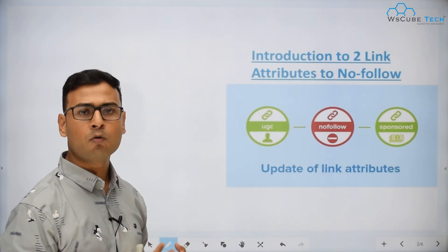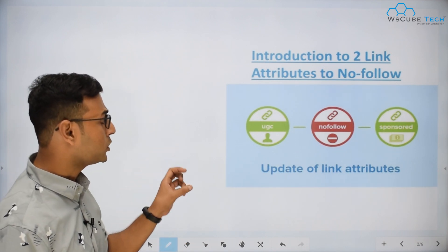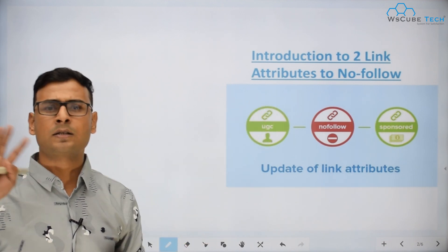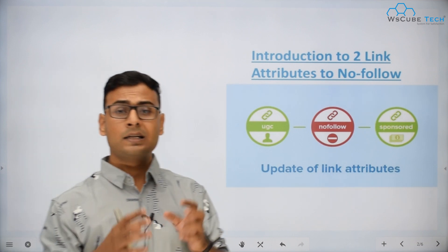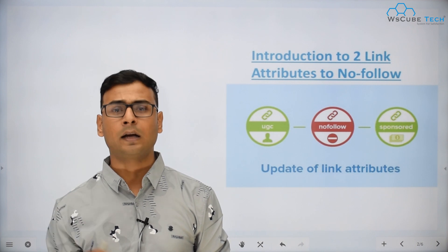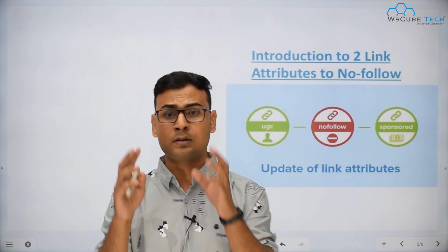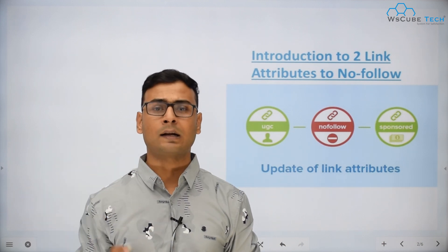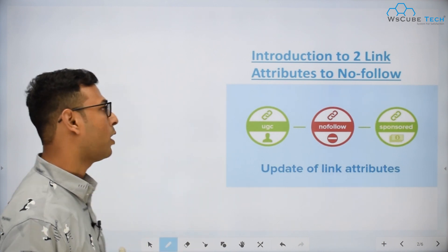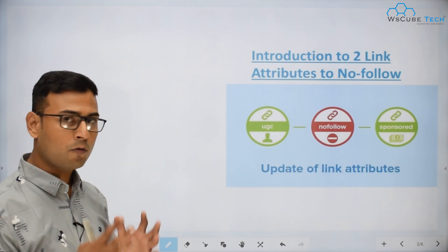This is actually a very recent update that we are going to discuss today — there is an introduction of two new attributes which can be used with the nofollow attribute. We have already discussed in previous videos how to see the nofollow attribute for a particular link: right-click on that link, go to the inspect section, and from there you can see if it's nofollow or dofollow, to recognize what kind of link it is.